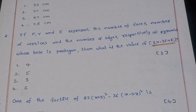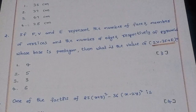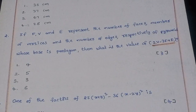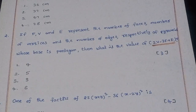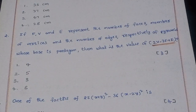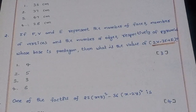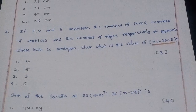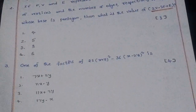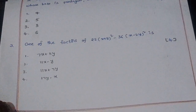Next question: If F, V, and E represent the number of faces, number of vertices, and number of edges respectively of a pyramid whose base is a pentagon, then what is the value of 2V minus 3F plus E? The right answer is option 3.